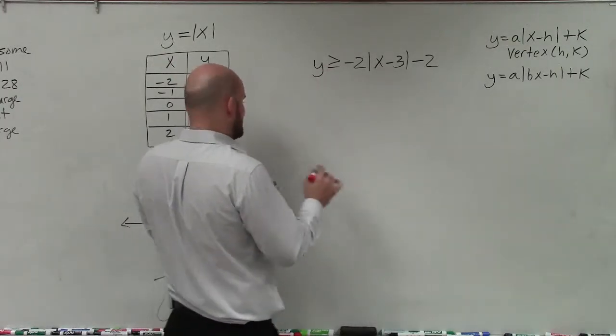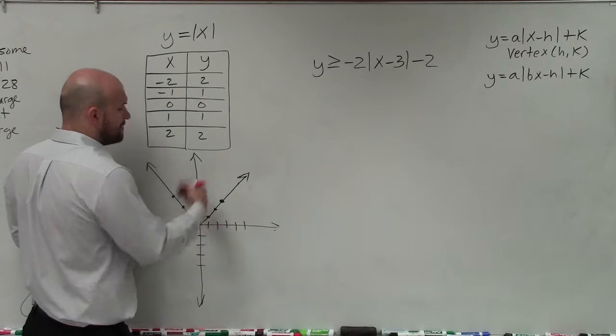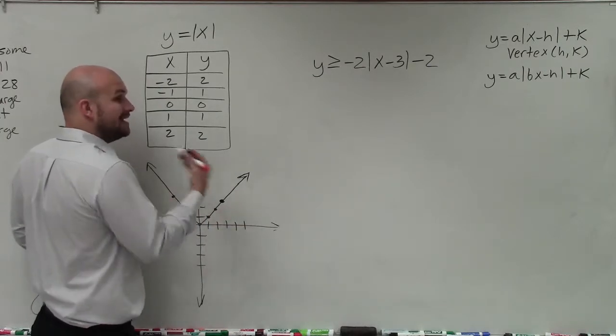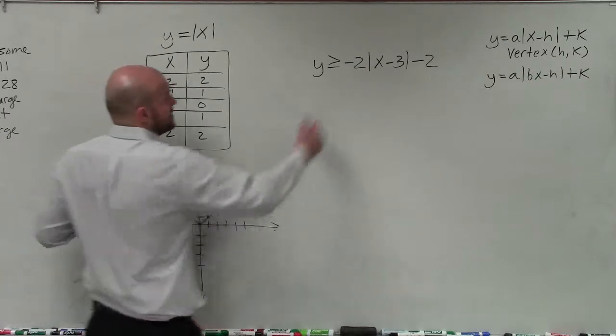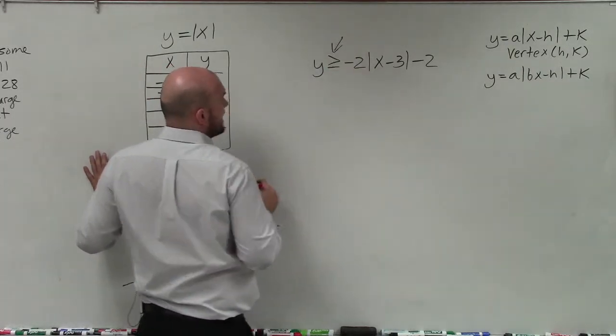But before we get to that, we want to make sure what type of graph. Is the graph that we're going to have going to be a part of the solution or not? If it's a part of the solution, then it's solid. If it's not a part of the solution, then it's going to be dashed. And we determine that by looking at our sign.